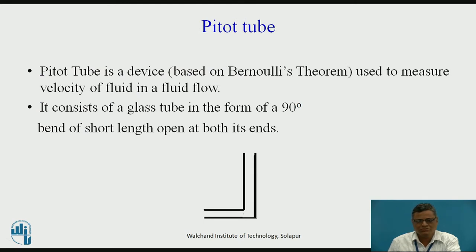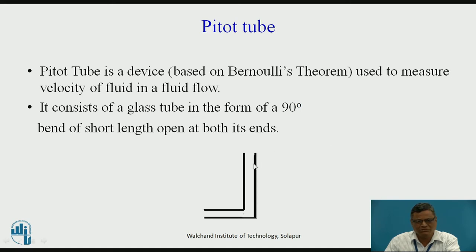The Pitot tube works on the principle of Bernoulli's theorem. A Pitot tube is a device used to measure the velocity of fluid in a fluid flow. Its construction consists of a glass tube bent through 90 degrees — one end is shorter and one end is larger, and both ends are open. The vertical side is larger compared to the horizontal one.